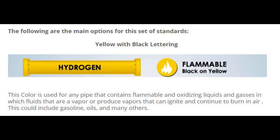Yellow with black lettering: This color is used for any pipe that contains flammable and oxidizing liquids and gases — fluids that are vapor or produce vapors that can ignite and continue to burn in air. This could include gasoline, oils, and many others.